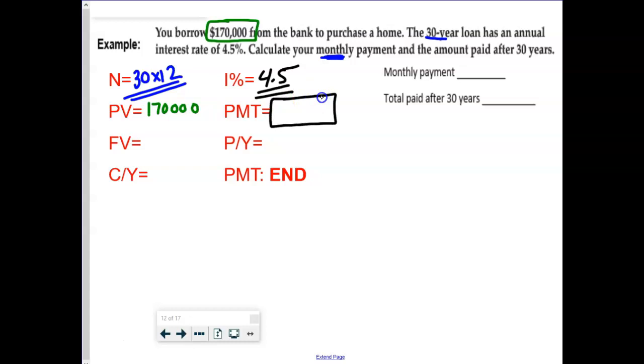So $170,000 is present value. We're going to be paying on our loan for 30 years, which is very typical for a mortgage. And it's going to be monthly payments. So for N, it's 30 times 12, which you can write 360 or you can just say 30 times 12. The idea is you're going to make that many payments. The interest rate is 4.5%. So write it as 4.5% for the calculator. This is called amortization.